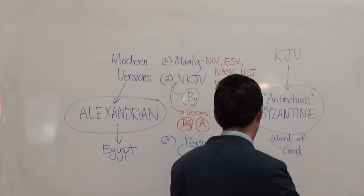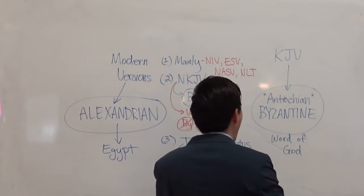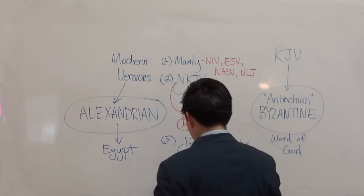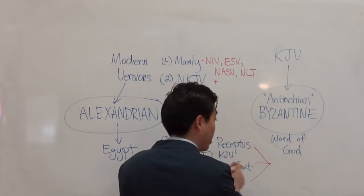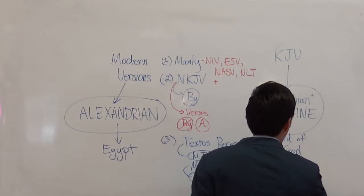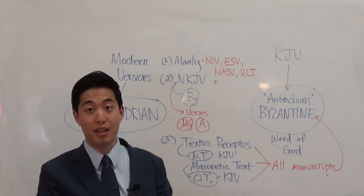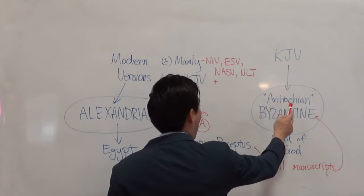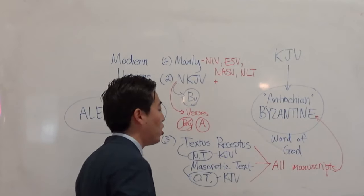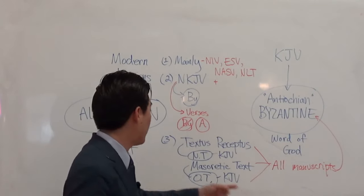Here's the correction against secular scholars: we believe in all manuscripts in line with the Antioch and Byzantine. When we argue Antioch and Byzantine manuscripts, we're not simply saying Greek — we're talking about all manuscripts that came from that Greek line.